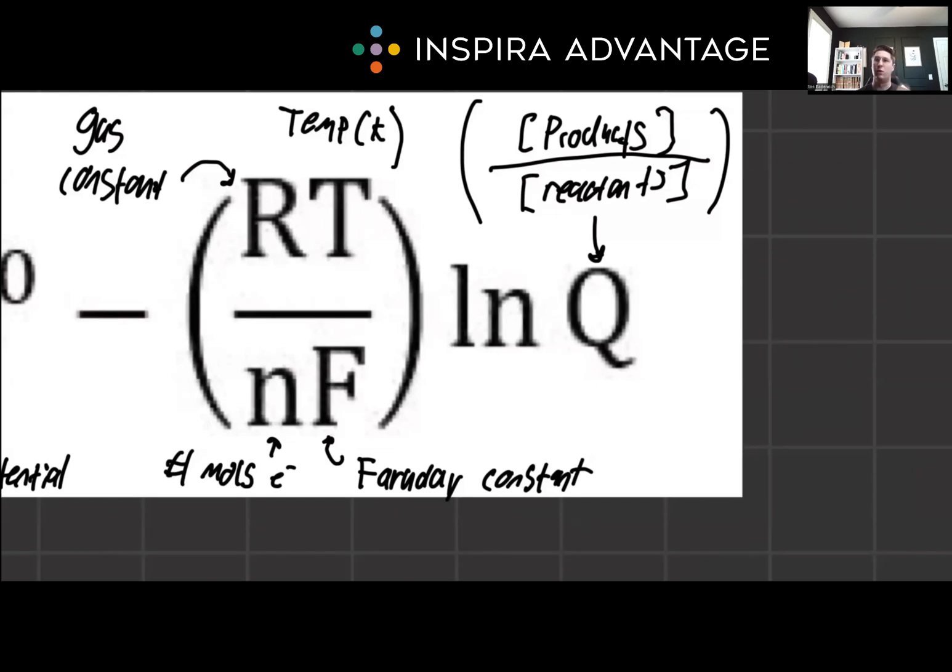So you can think of Q as telling you, are you left or right shifted within the stoichiometry of an equation, right? If Q is higher, it means we've got more products, meaning we're more right shifted. Whereas if Q is less than one, it means we have more reactants than we do products, meaning the left side of the stoichiometry is probably heavier.